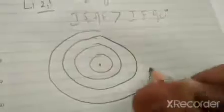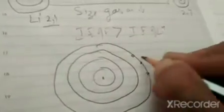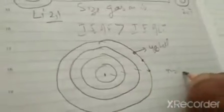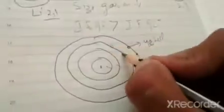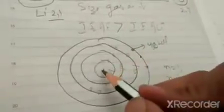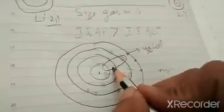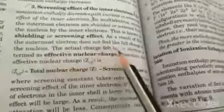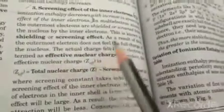The outermost shell electrons are screened from the nucleus by the inner electrons — this is known as the screening or shielding effect. For example, if an electron is in the fourth shell (n=4), the electrons in shells n=1, n=2, and n=3 screen it. As a result, the outermost shell electron does not feel the full charge of the nucleus.